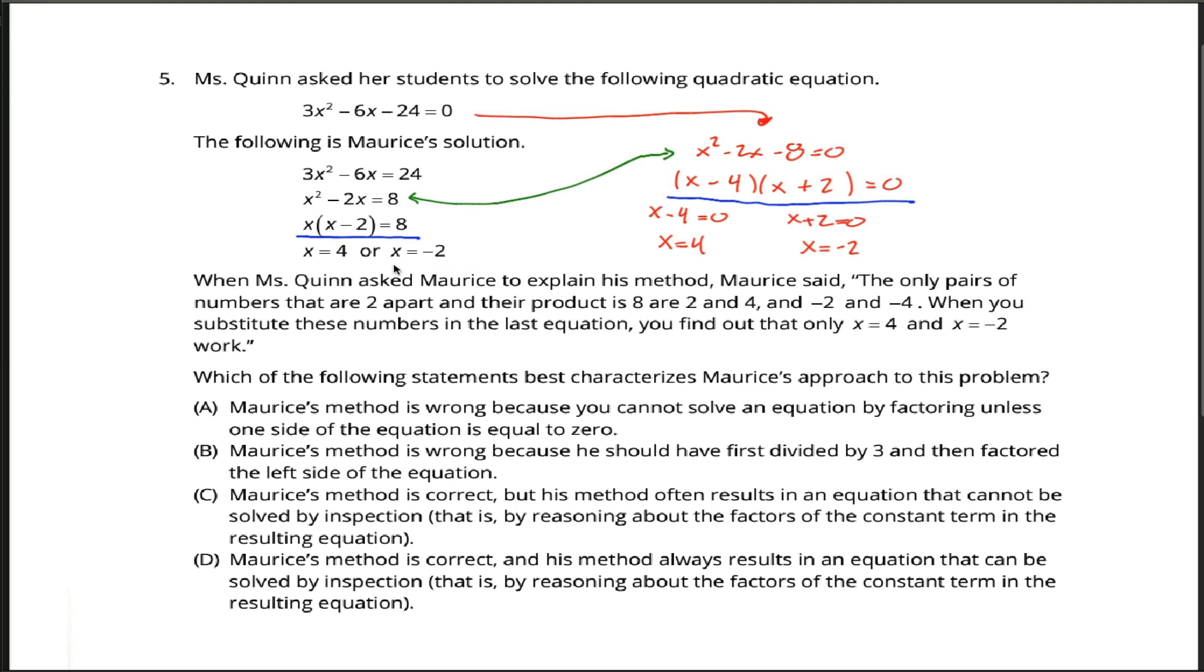And I say arguably because the correct answer to this question is c here, where they say this method often results in an equation that cannot be solved by inspection. That is, by reasoning about the factors of the constant term in the resulting equation. I hate that. I think that that's garbage. Before I cry more about that, let me talk more about how Maurice finished the problem here.